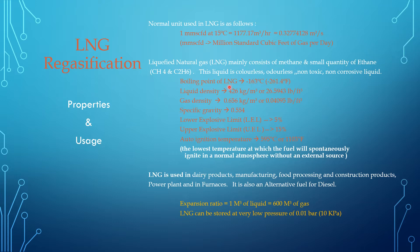The boiling point of LNG is minus 160 degrees centigrade, or 261 degrees Fahrenheit. The liquid density of LNG is 426 kg per meter cube, or 26.5943 pounds per feet cube. The natural gas density is 0.656 kg per meter cube, or 0.04095 pounds per feet cube. The specific gravity of LNG is 0.554.